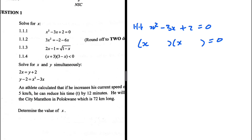We are looking for two factors of 2 which when multiplied give 2, but when added give minus 3 — that is minus 2 and minus 1. If you multiply those two numbers you get plus 2, but when you add them you get minus 3. So x equals 2 or x equals 1. That is the solution to 1.1.1.